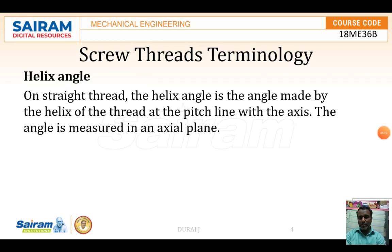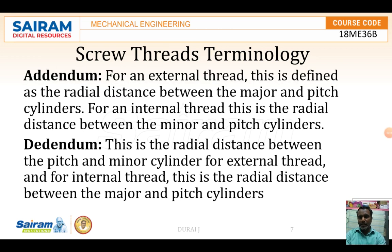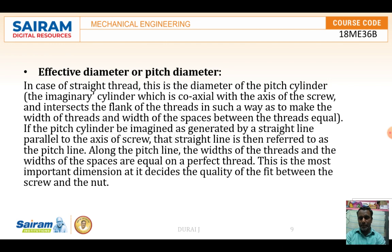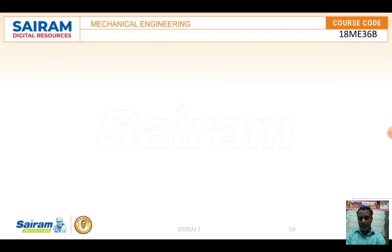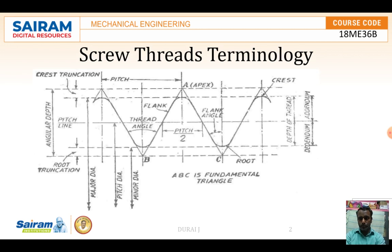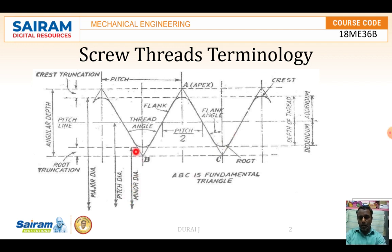The addendum and dedendum are very important. Once again — the major diameter is the distance from crest to the other side crest. Minor diameter is from root to the other side of the root.